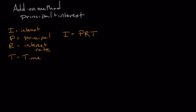Let's walk through a calculation so you can see how to use the formula. Let's say we're getting a loan where the principal amount is $5,000. The interest rate on this loan is 8%, which we convert to a decimal: 0.08. It's really important to do that conversion, otherwise you'll get an unrealistically huge number for the interest owed.